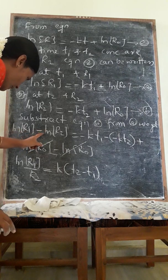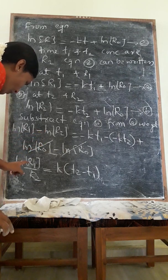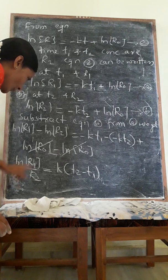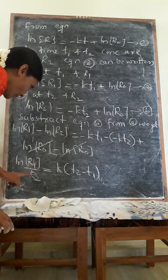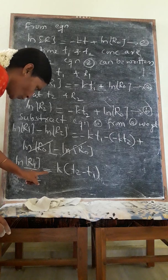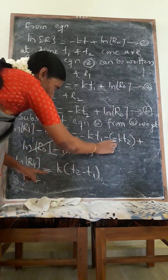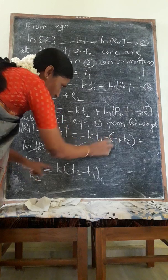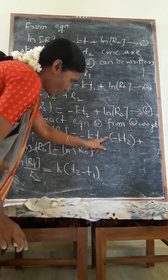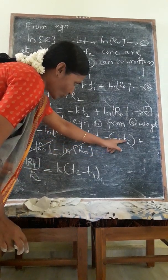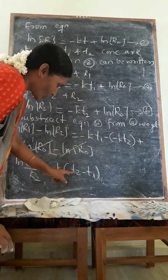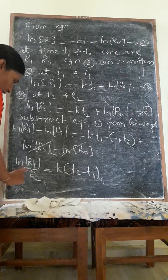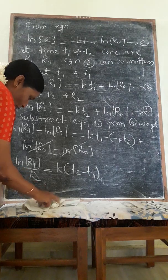Remaining term is ln R1 minus ln R2. This is ln R1 divided by R2. This ln R1 divided by R2 equals, this is minus into minus plus, that means plus kT2 minus kT1. Common is k, therefore T2 minus T1. This is another form of equation.